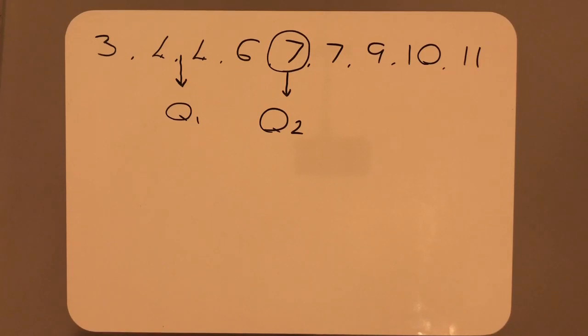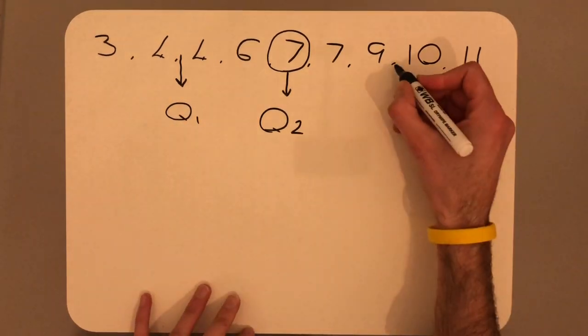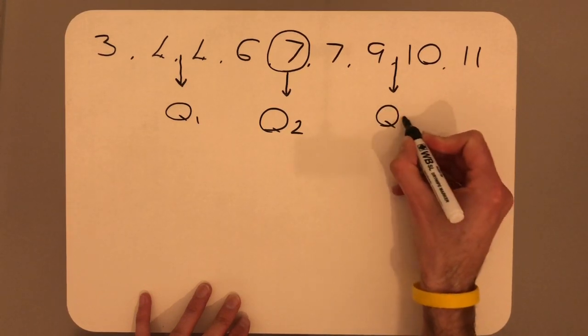Now, as previously mentioned, there is always going to be an element of symmetry with your quartiles. So in the upper half, that should be the same as the lower half. So we can place our arrow here and this will be Q3.